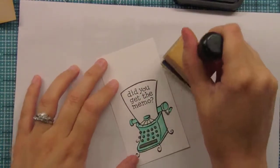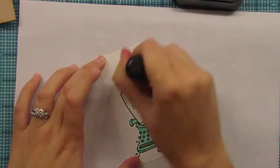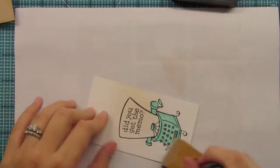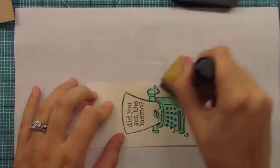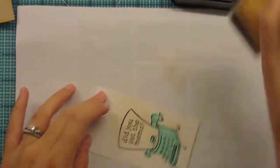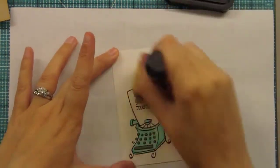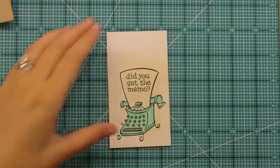So right now I'm adding Antique Linen Distress Ink to the typewriter to age it, especially the paper part, because I want it to match the card. If it was stark white, then it wouldn't match. But I'm going right over the Copic coloring too. This Memento ink doesn't bleed with the Distress Ink when you blend it. So I'm just kind of going over before I cut it out. It's easier before you cut it out because then you have some space to work with.